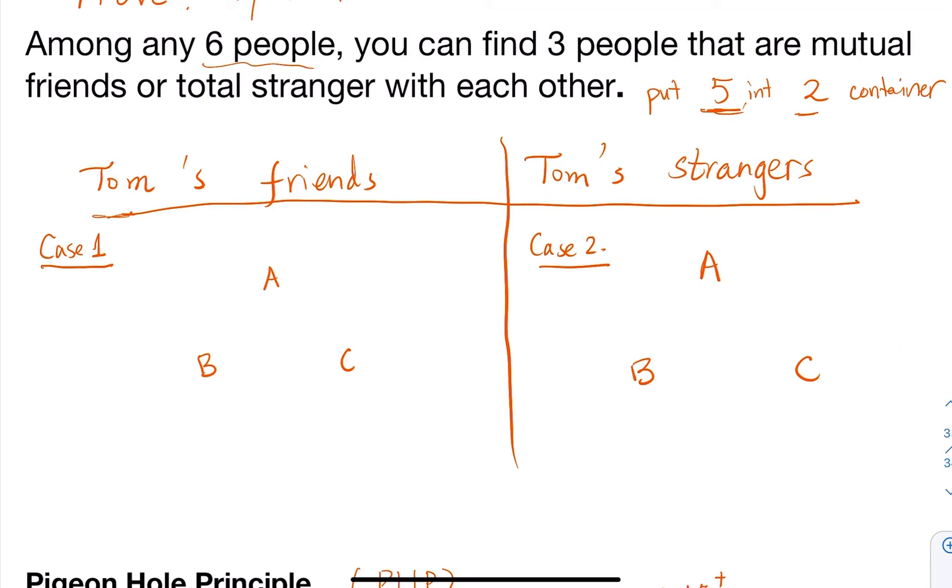But how do we prove we can find three people who know each other? Right now we have three people, but we're not sure if A, B, C know each other. Think about it: if they all know each other, we're done. But maybe only some of them know each other.